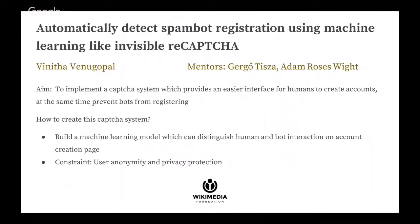Our aim is to create a CAPTCHA system similar to Google's Invisible CAPTCHA, which is very convenient for humans, and at the same time can prevent bots from creating accounts. We do this by building a machine learning model. Our constraint here is that we cannot use private data which can identify the user. Instead, we have to maintain user anonymity while creating features or recording the data that the user provides while creating the account.